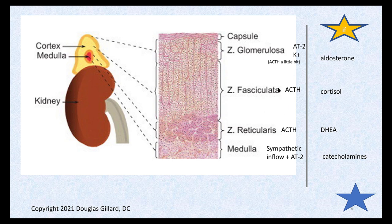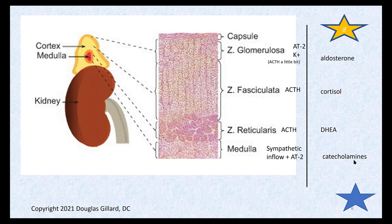This is a good memorization slide showing the overall scheme. The zona glomerulosa is stimulated by angiotensin 2 and potassium concentration in the blood — and a little ACTH — to release aldosterone. ACTH stimulates fasciculata cells to release cortisol and glucocorticoids. ACTH also stimulates zona reticularis cells to release DHEA and DHEAS. The medulla is stimulated by angiotensin 2 and sympathetic inflow to release the catecholamines: epinephrine, norepinephrine, and dopamine.